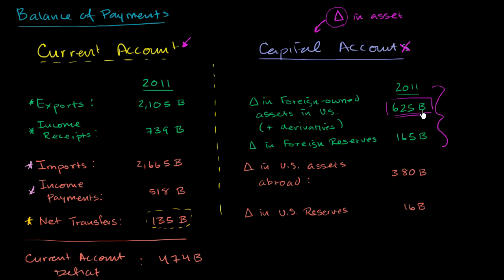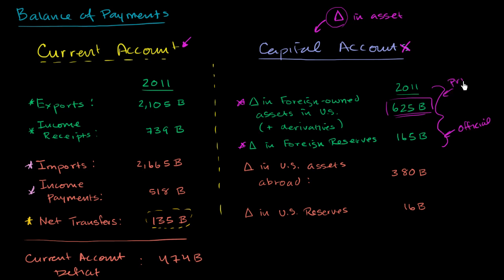That's why it's an inflow — because when they bought that house, they would have had to make a payment to me. This right over here shows the change in foreign-owned assets in the US, and it also includes financial derivatives and the change in foreign reserves. The difference between those two: you could view the first as privately-owned changes in ownership, and the second as official changes in ownership by either the government or the central banks of foreign countries. In the US, they maintain a pseudo-independence, but this is the official government ownership side.